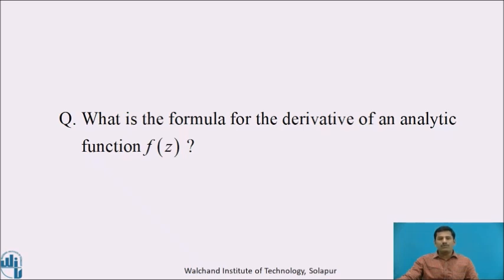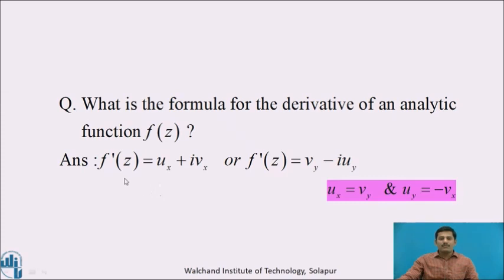Pause this video and write down the answer for the question: what is the formula for the derivative of an analytic function f(z)? The derivative of any analytic function f(z) is given as f'(z) = ux + i·vx. This derivative also has another form: since f(z) is analytic, its real and imaginary parts satisfy the CR equations ux = vy and uy = -vx. Replacing ux by vy and vx by -uy, we get f'(z) = vy - i·uy.